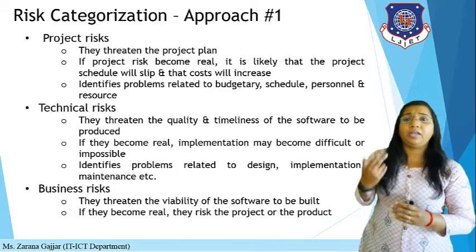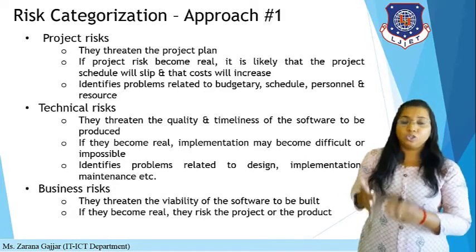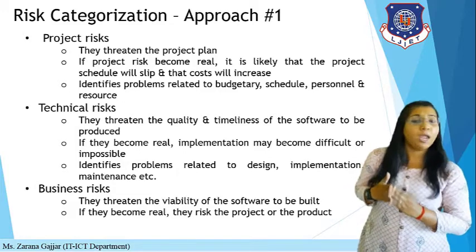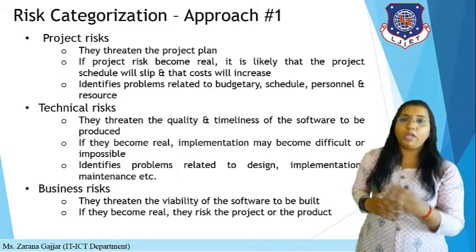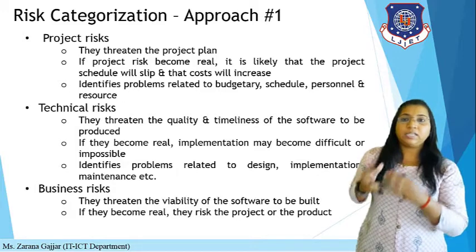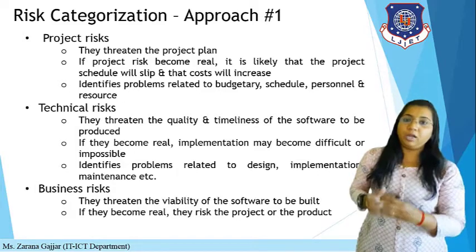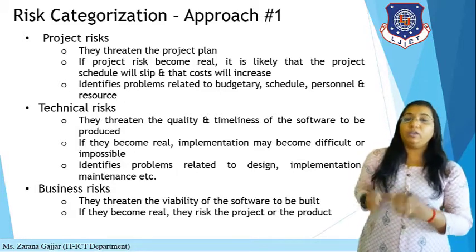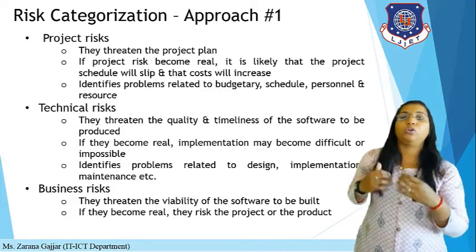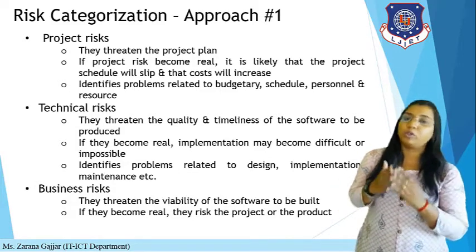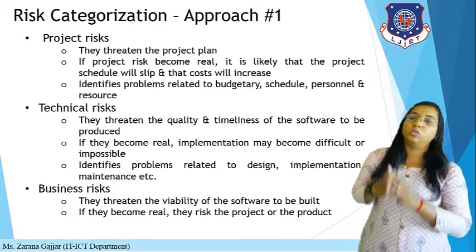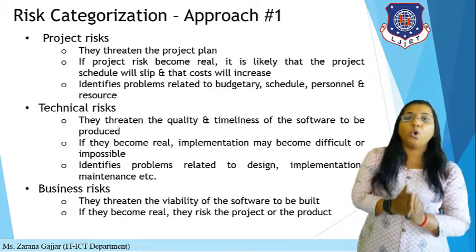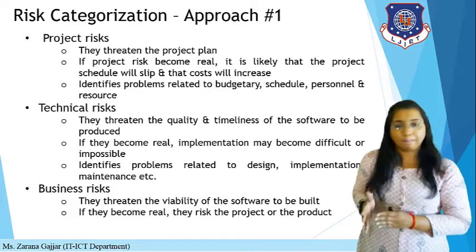The third category is business risk. Business risk threatens the viability — that is, the feasibility — of the software to be built. If business risk becomes real, it risks the project or the product. If there is no feasible solution or feasible requirement for your software, then it leads to software risk, known as business risk.